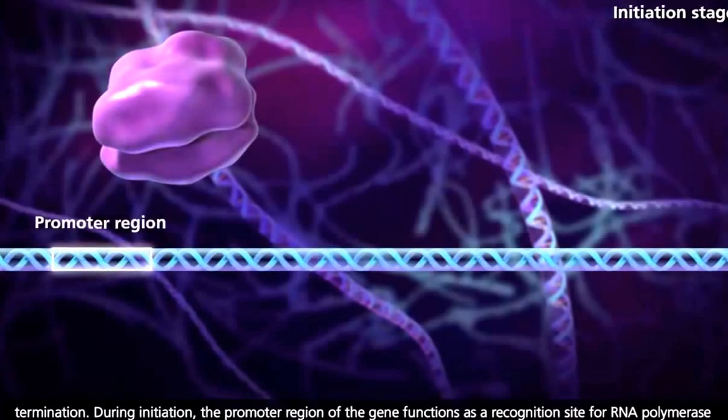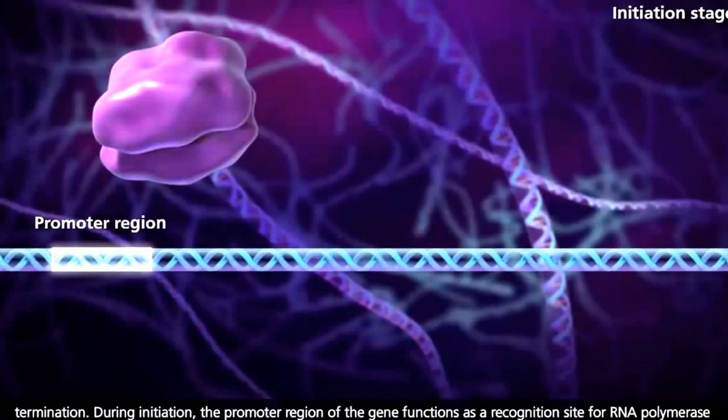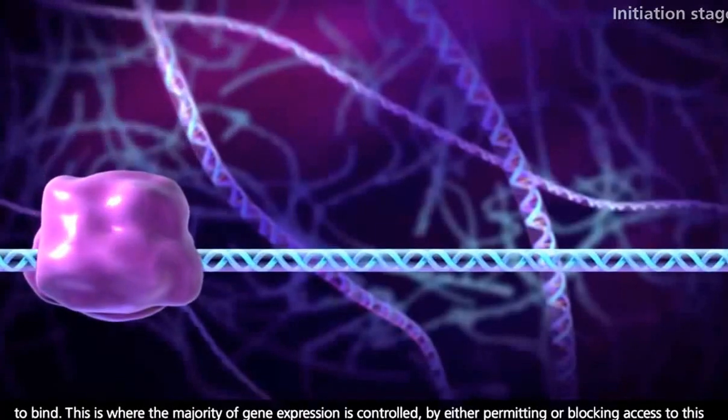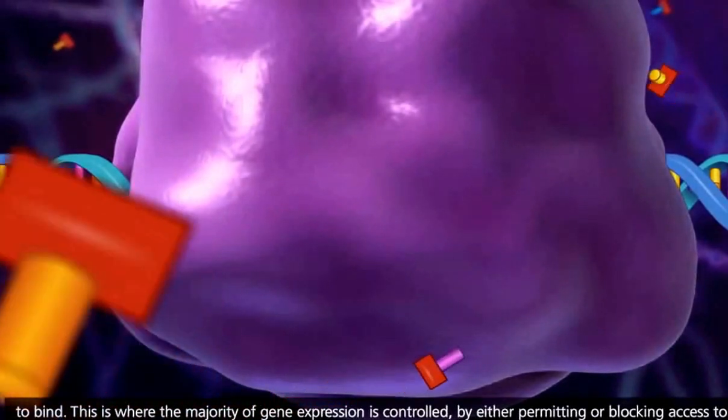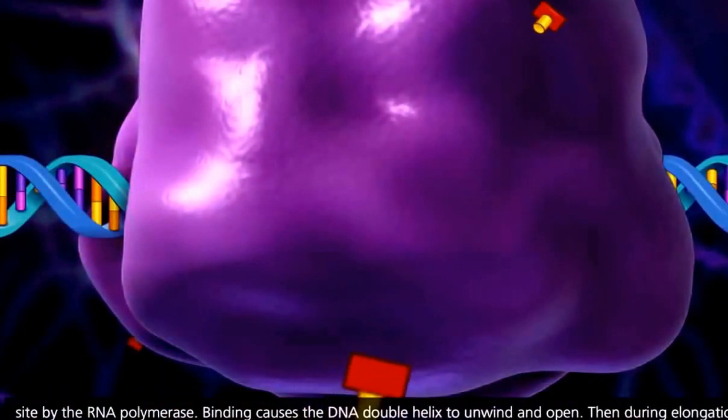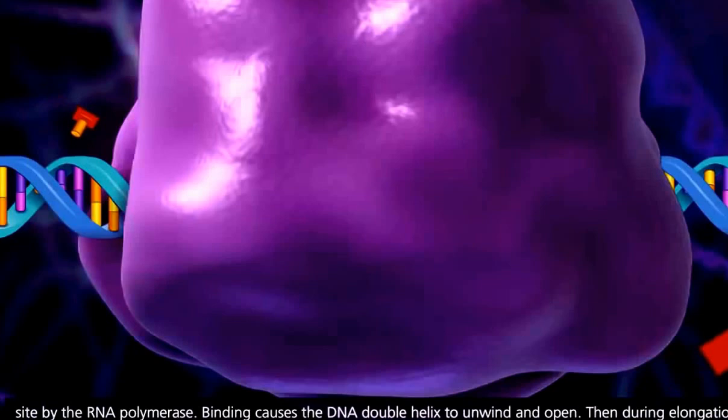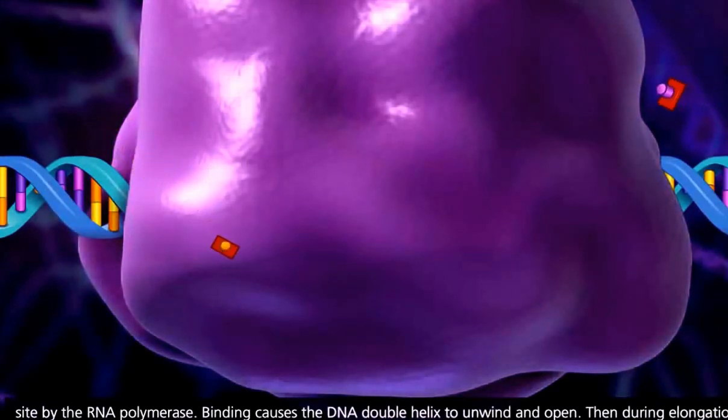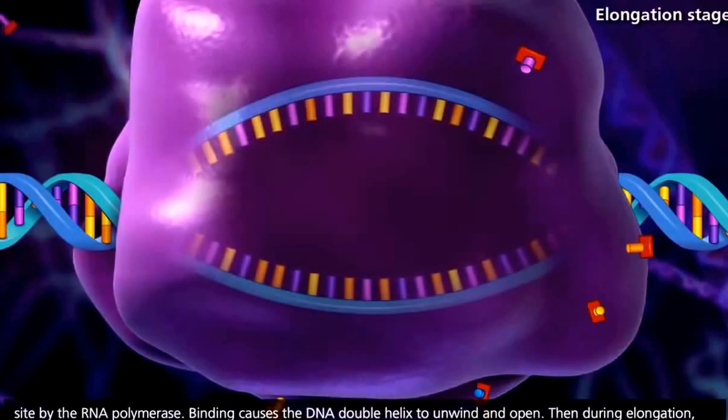During initiation, the promoter region of the gene functions as a recognition site for RNA polymerase to bind. This is where the majority of gene expression is controlled, by either permitting or blocking access to this site by the RNA polymerase. Binding causes the DNA double helix to unwind and open.